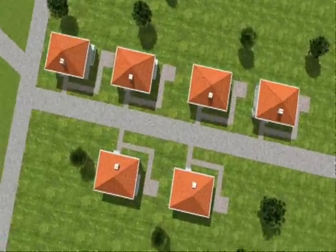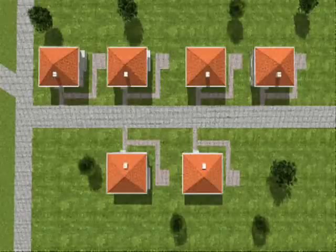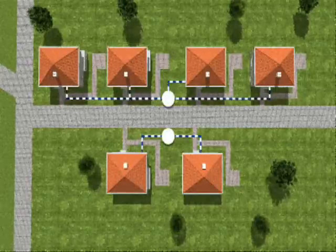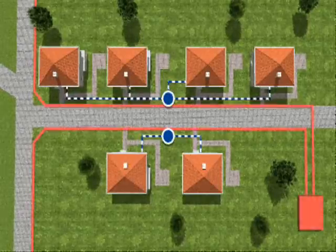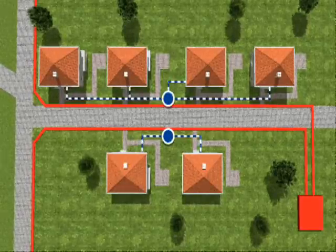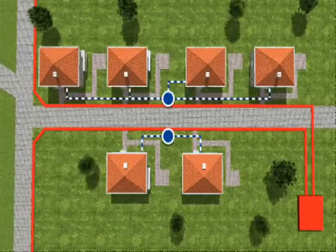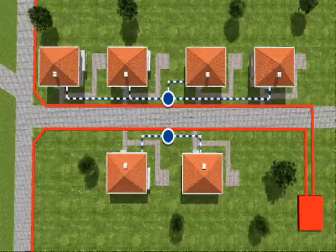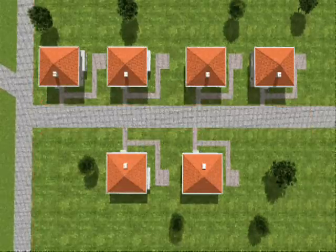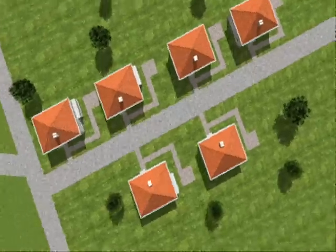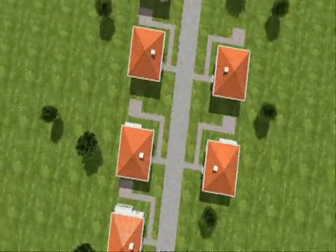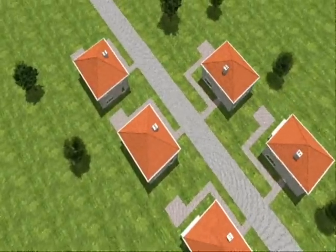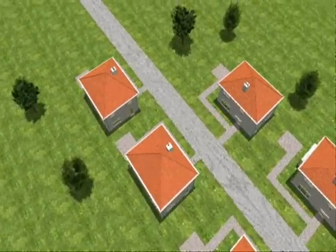Domestic wastewater from up to four houses is collected via gravity to a single sewage collection chamber, generally located in a footpath or the shoulders of the road. These collection chambers do not require any power connection. In the QuaFaq system, no breather pipes are required.